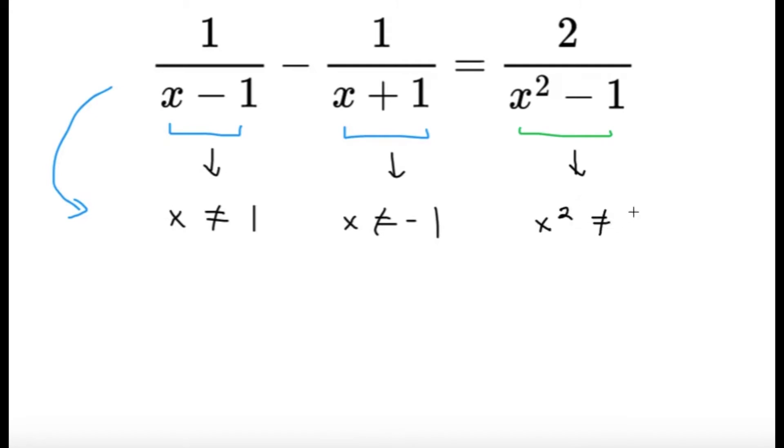And then for this part, we should have x squared not equal to 1. Well, this is going to give you x is not equal to 1 or negative 1 anyways. And combining all these three restrictions, we're going to simply get that x is not equal to 1 or negative 1.